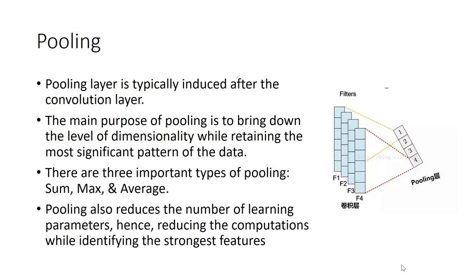Now the pooling layer. The pooling layer is typically added after the convolution layer. The main purpose of the pooling layer is to bring down the level of dimensionality while retaining the most significant patterns of the data. Pooling also reduces the number of learning parameters, reducing the computation while identifying the strongest features.